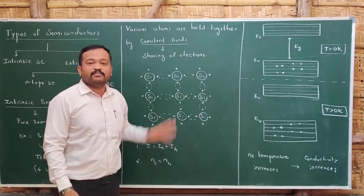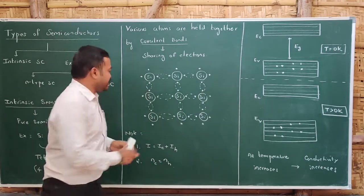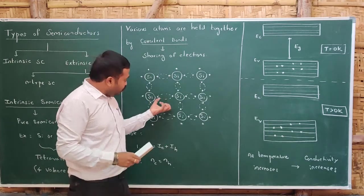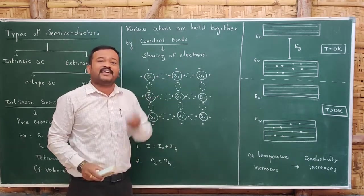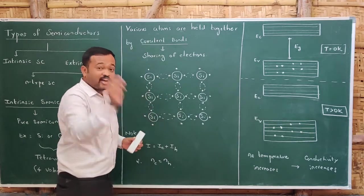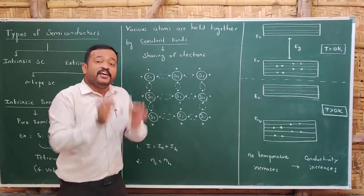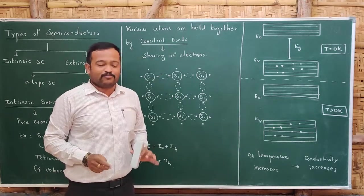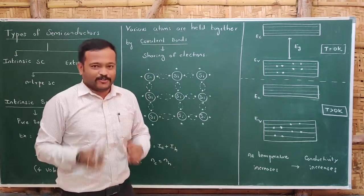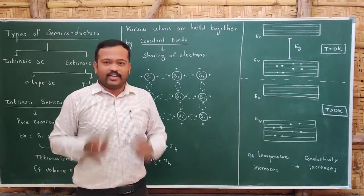Let us check out the crystal structure. These are the silicon atoms, each with four electrons. We have seen that there are four valence electrons and all these atoms are held together by covalent bonds — the dotted lines represent covalent bonds. These bonds are formed by sharing of electrons. These electrons are called bonding electrons.